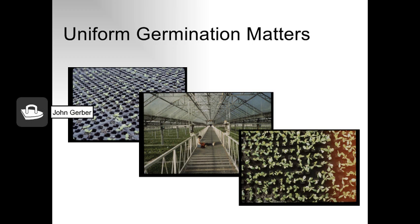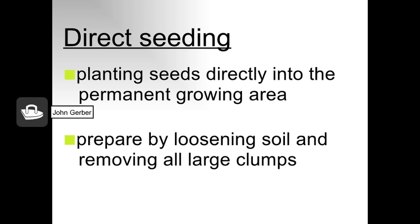In this large greenhouse in Virginia, the seeds on the left are germinating very poorly, causing a huge economic loss. The photo on the right shows much better germination — lettuce seedlings in a hydroponic greenhouse. When seeds are planted in soil, the seed bed must be loose and fine-textured to have just the right amount of moisture and oxygen. Seeds planted too deep may not germinate, and seeds planted too shallow may dry out.